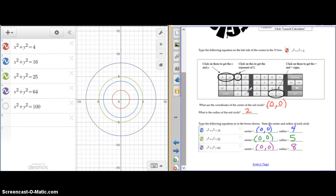So, we're hoping that you've noticed a pattern by now. The circle with this formula, x squared plus y squared equals 4, has a center at 0, 0, and a radius of 2. In fact, they all have centers at 0, 0. But let's take a look at the radius. This circle has a radius of 4. This circle has a radius of 5. This circle has a radius of 8.